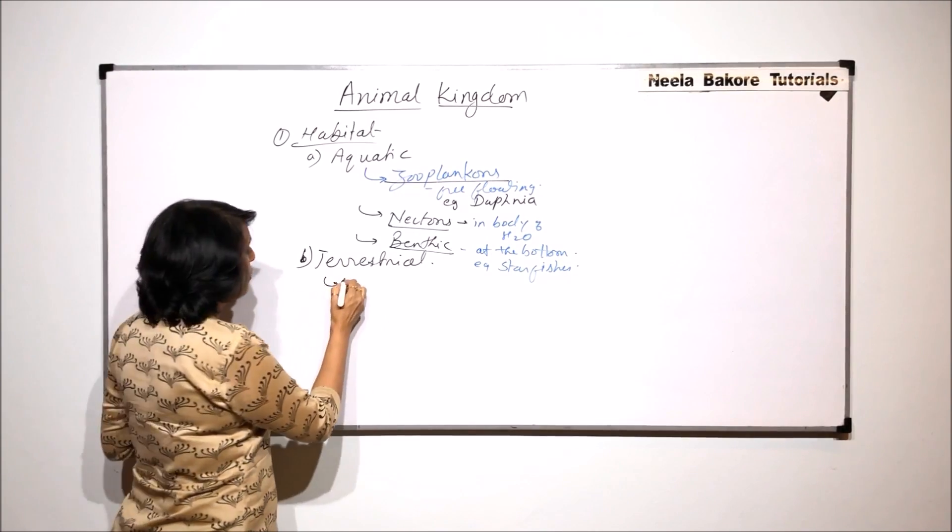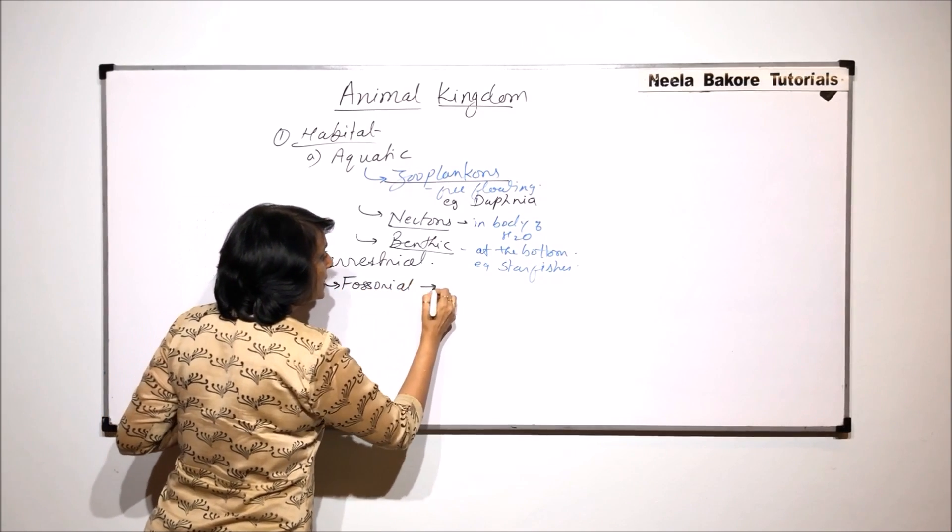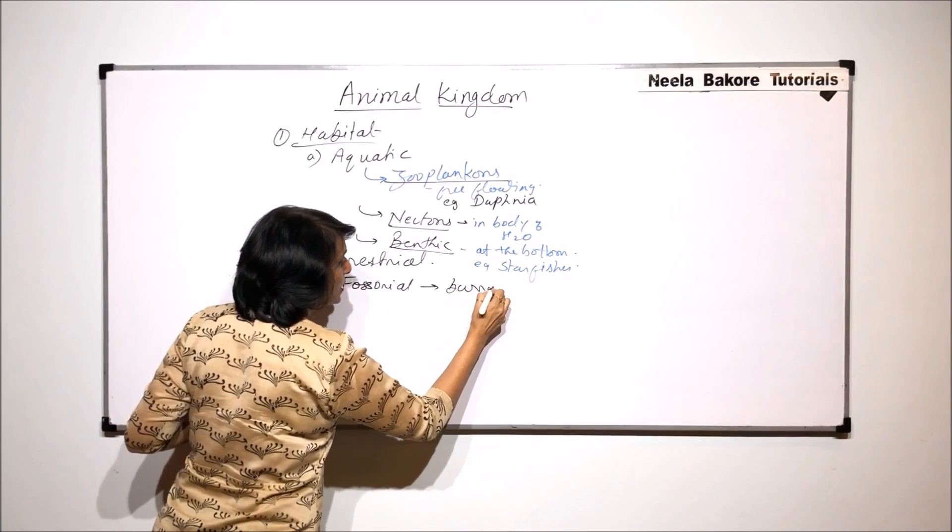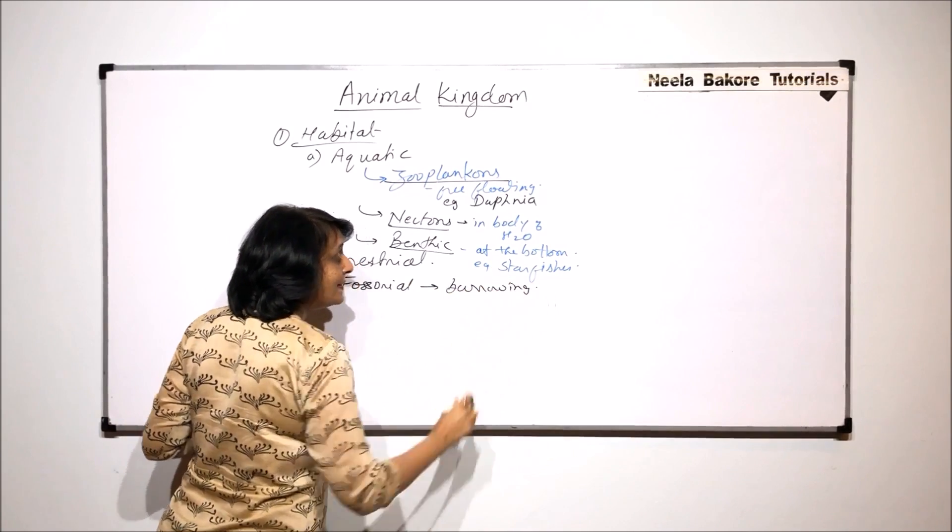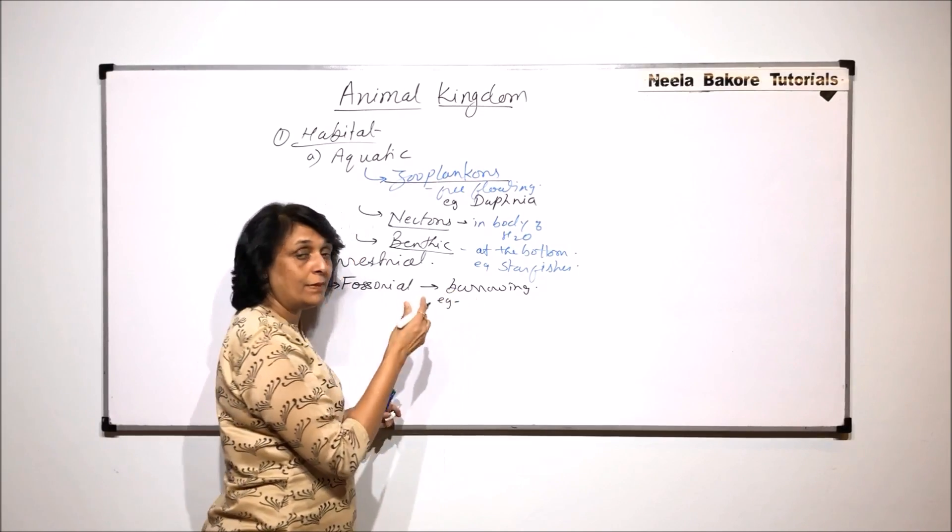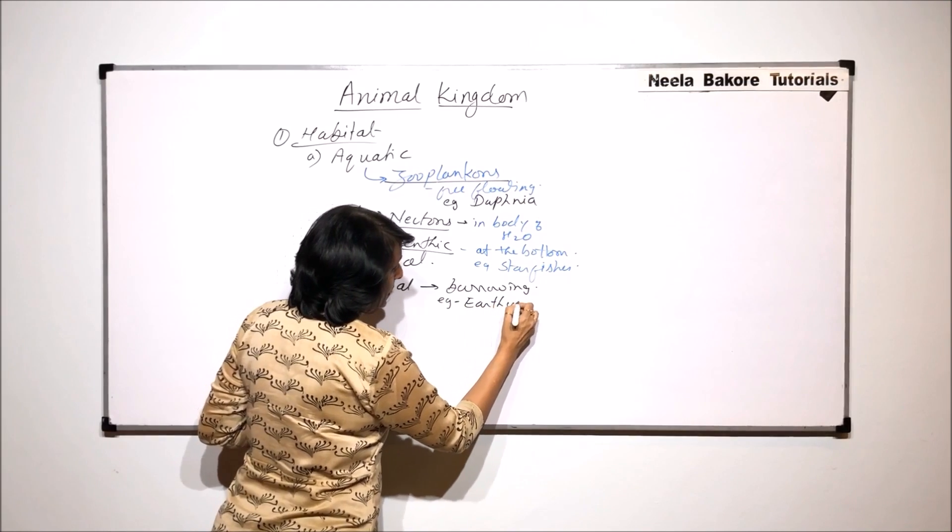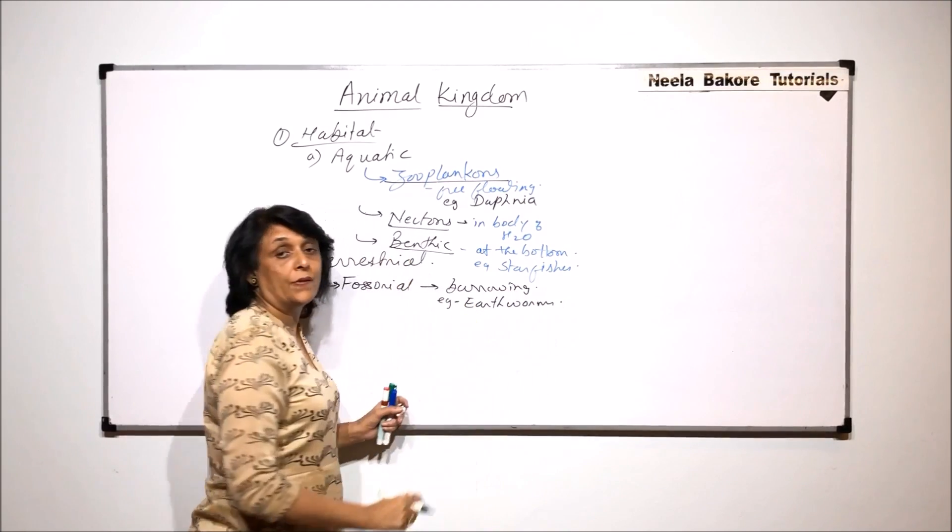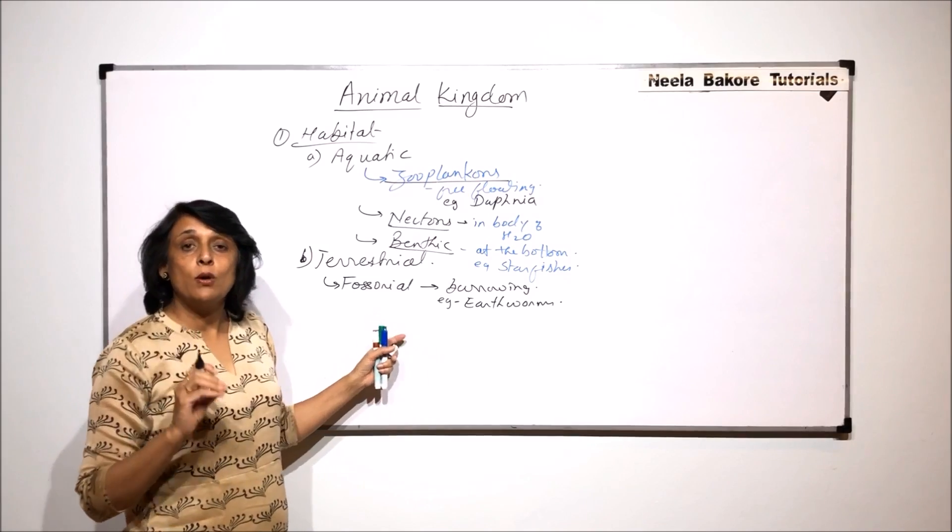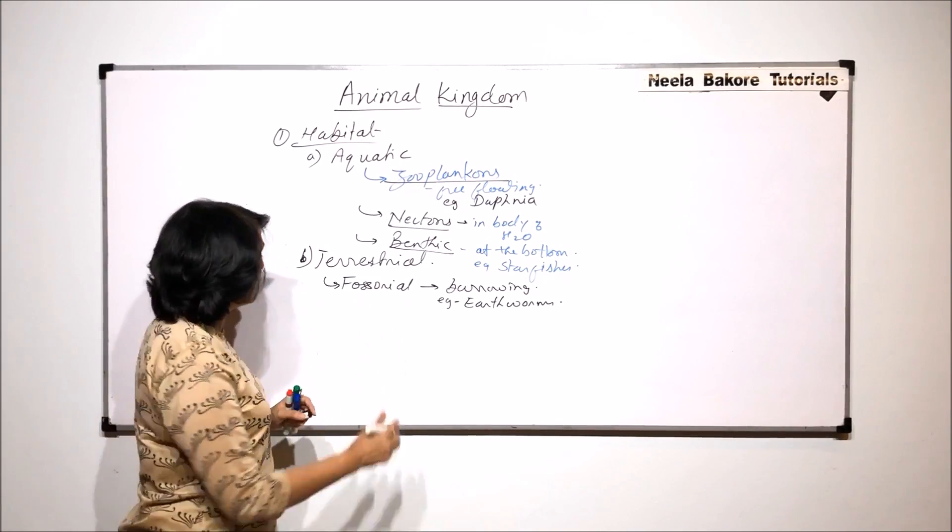So first, they are called fossorial. Fossorial animals are burrowing animals. That means they live in burrows which are made in the soil. An example, there are many, but we will just take one. Earthworm. Rabbits. They make burrows in the soil and that is where they live. So they are known as fossorial animals.